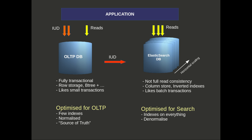Effectively we've got our OLTP database which is optimized for OLTP traffic — it has not that many indexes, because more indexes hurts inserts and updates. It's going to be normalized with just a little bit of denormalization, and it provides a very good source of truth being fully transactional. On the other side, Elasticsearch is optimized for search — we can have indexes on virtually everything, and also combined indexes like first name plus last name plus address, plus more denormalization.